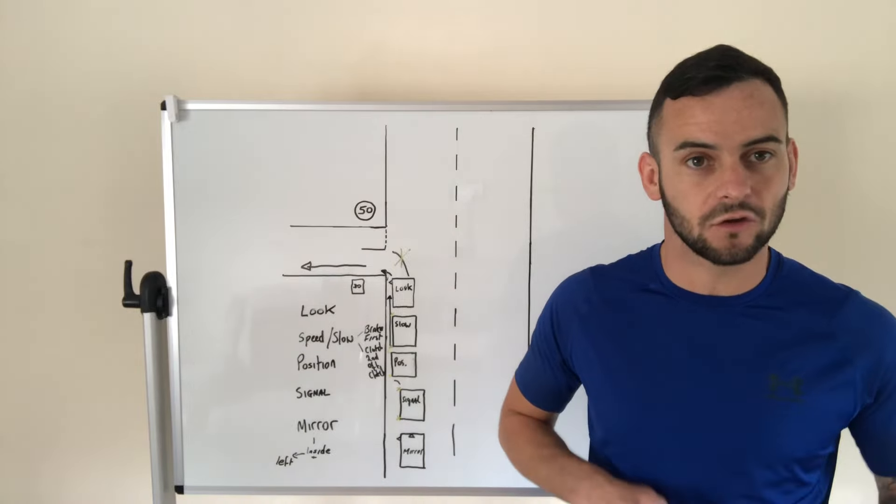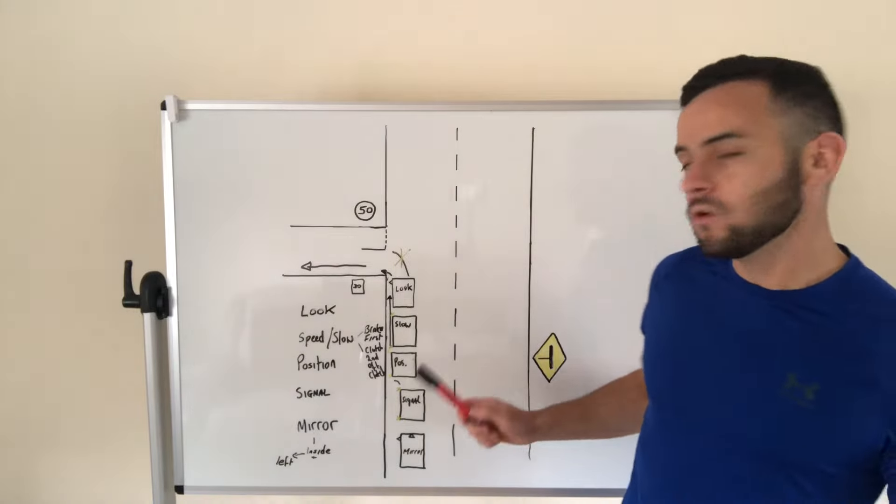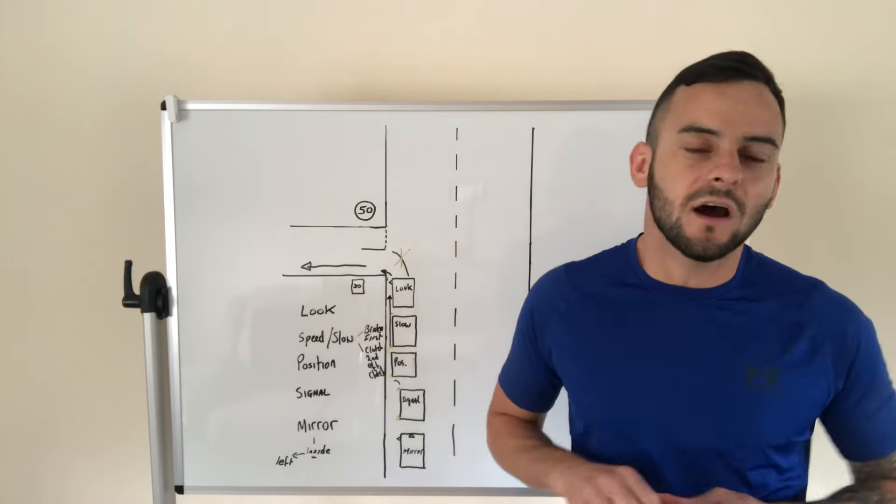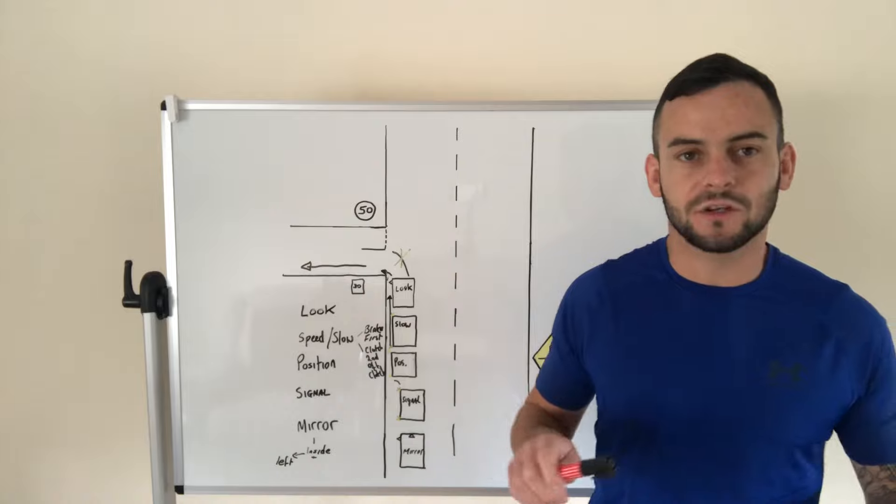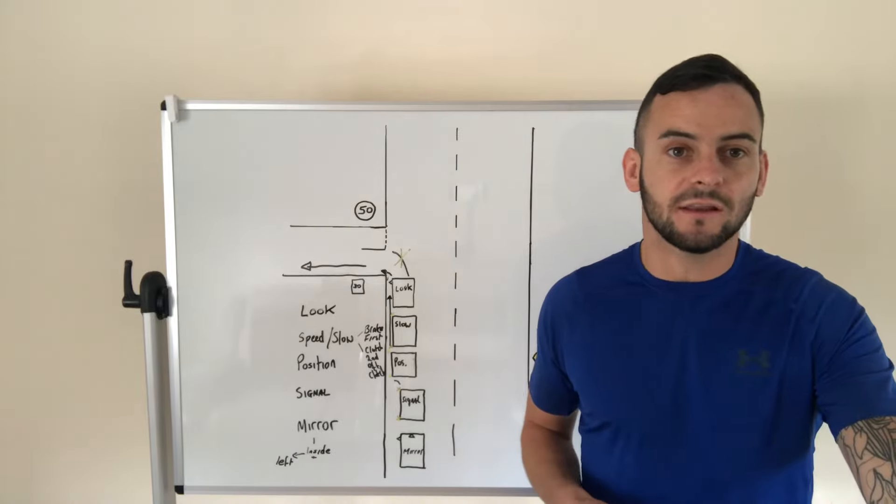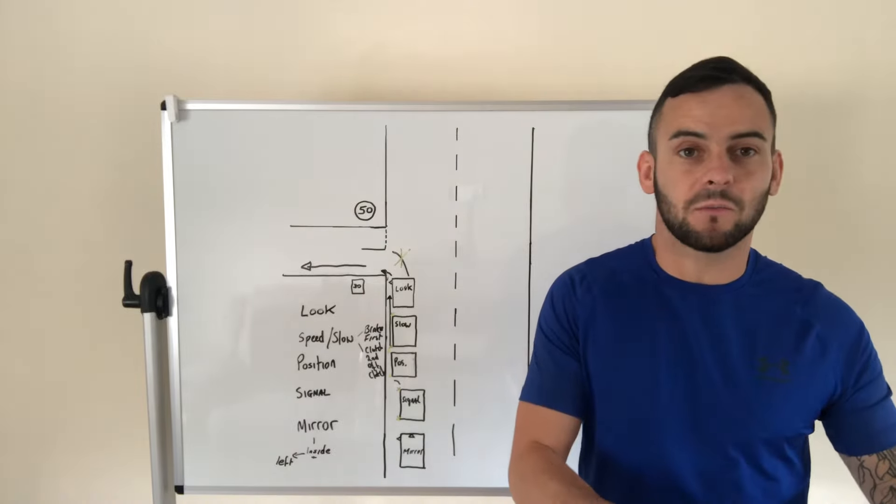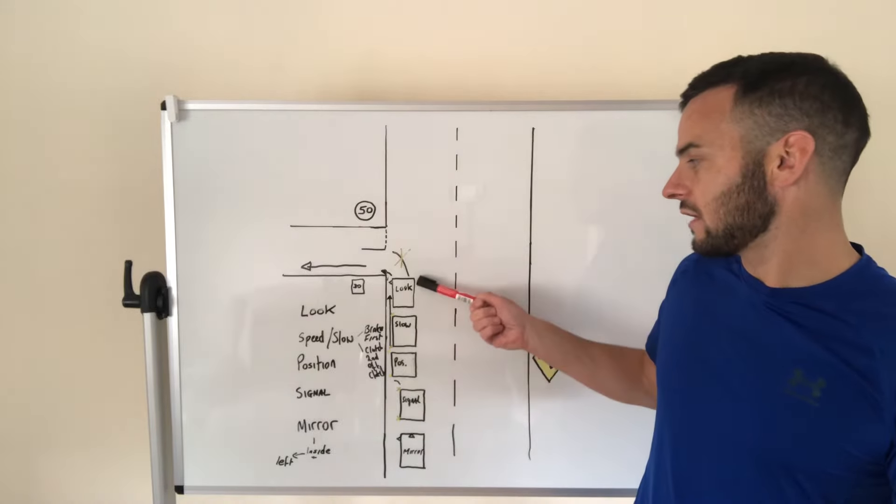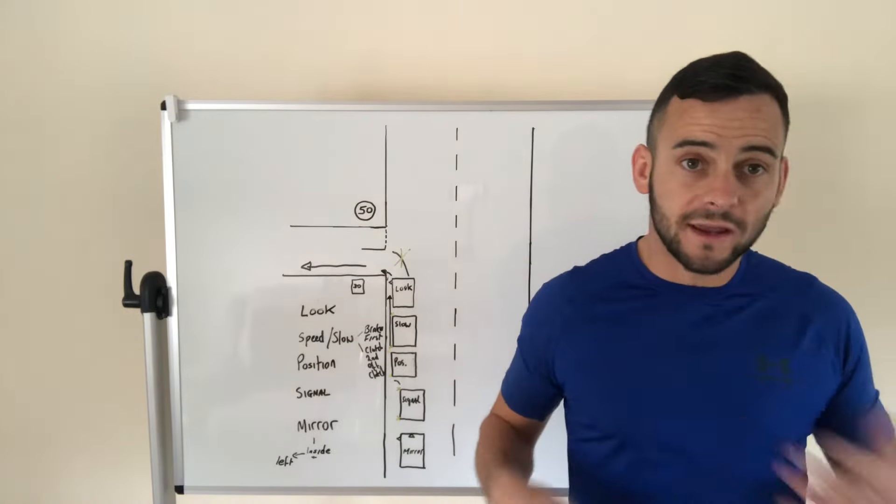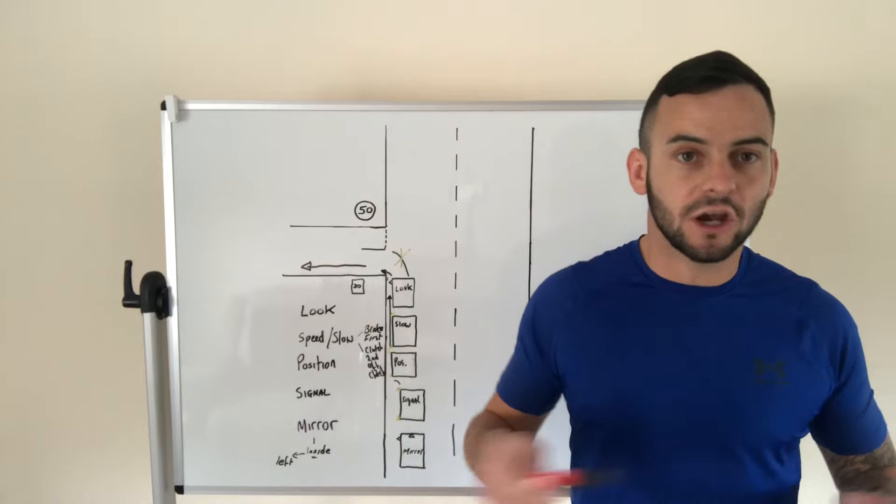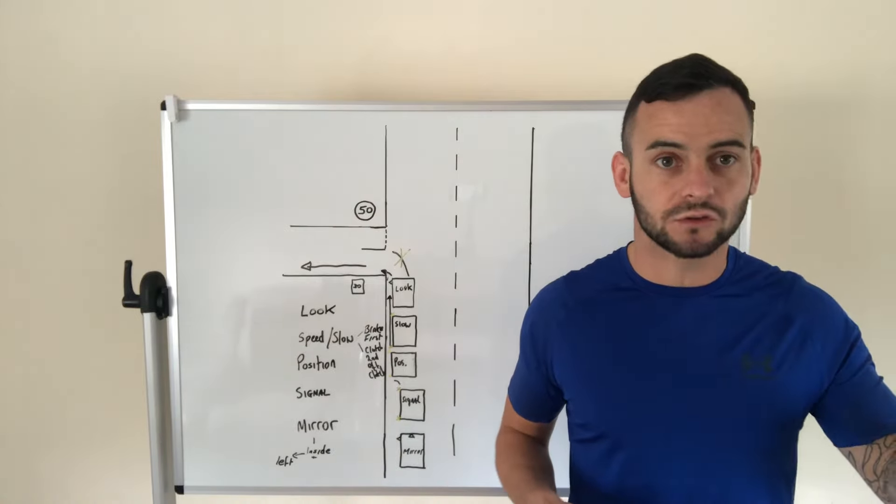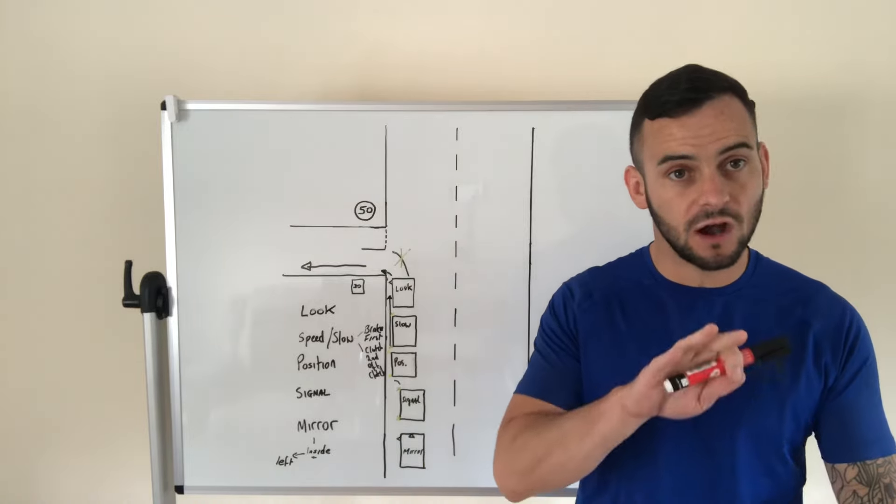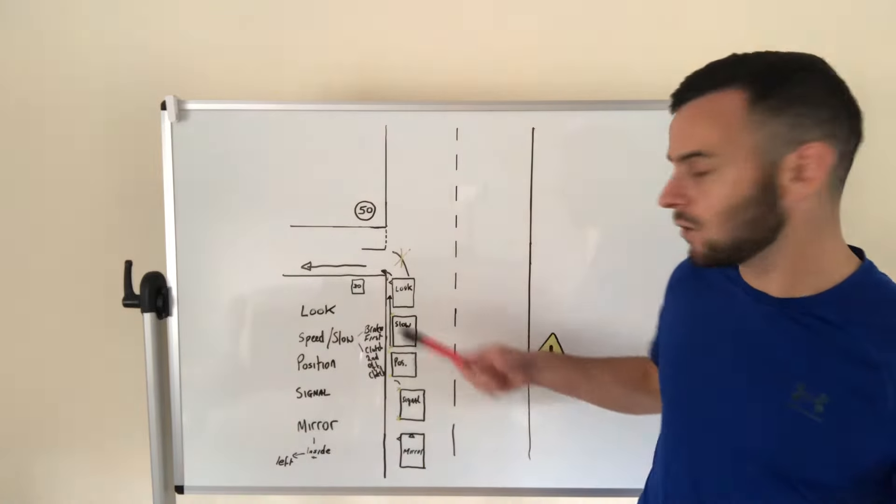Once you're in position that's when we slow. A lot of the time I always see people once they're in position, they clutch in and then they start to slow with the brake and they're trying to change the gear and they're going way too fast. Another way of doing it, the correct way, would be right I'm in position now we have to slow. So you have to think to yourself brake first, you're always on the brake first, that's how we slow the car down. We're in position, we're nice and straight, and we're on the brake.